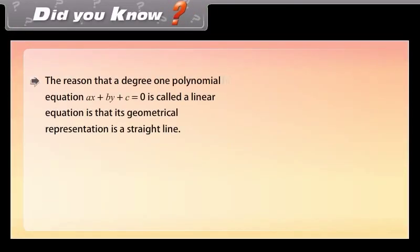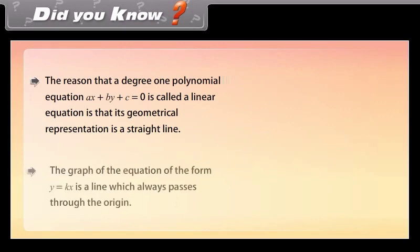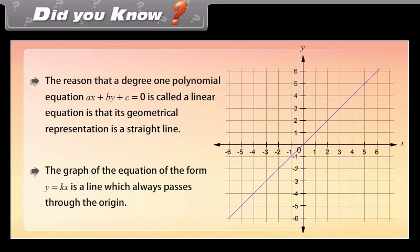Did you know? The reason that the degree-1 polynomial equation AX plus BY plus C equals 0 is called a linear equation is that its geometrical representation is a straight line. The graph of an equation of the form Y equals kX is a line which always passes through the origin.